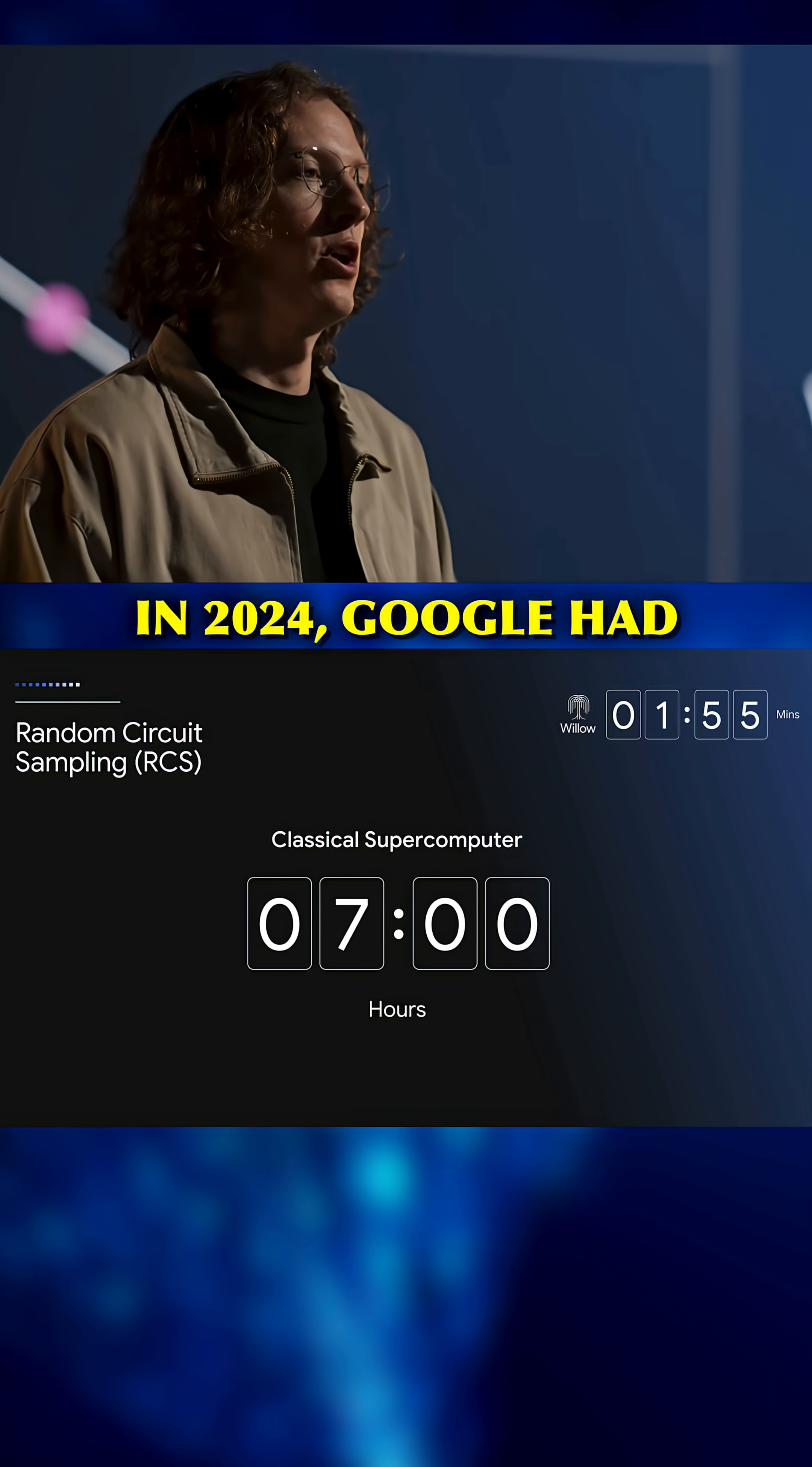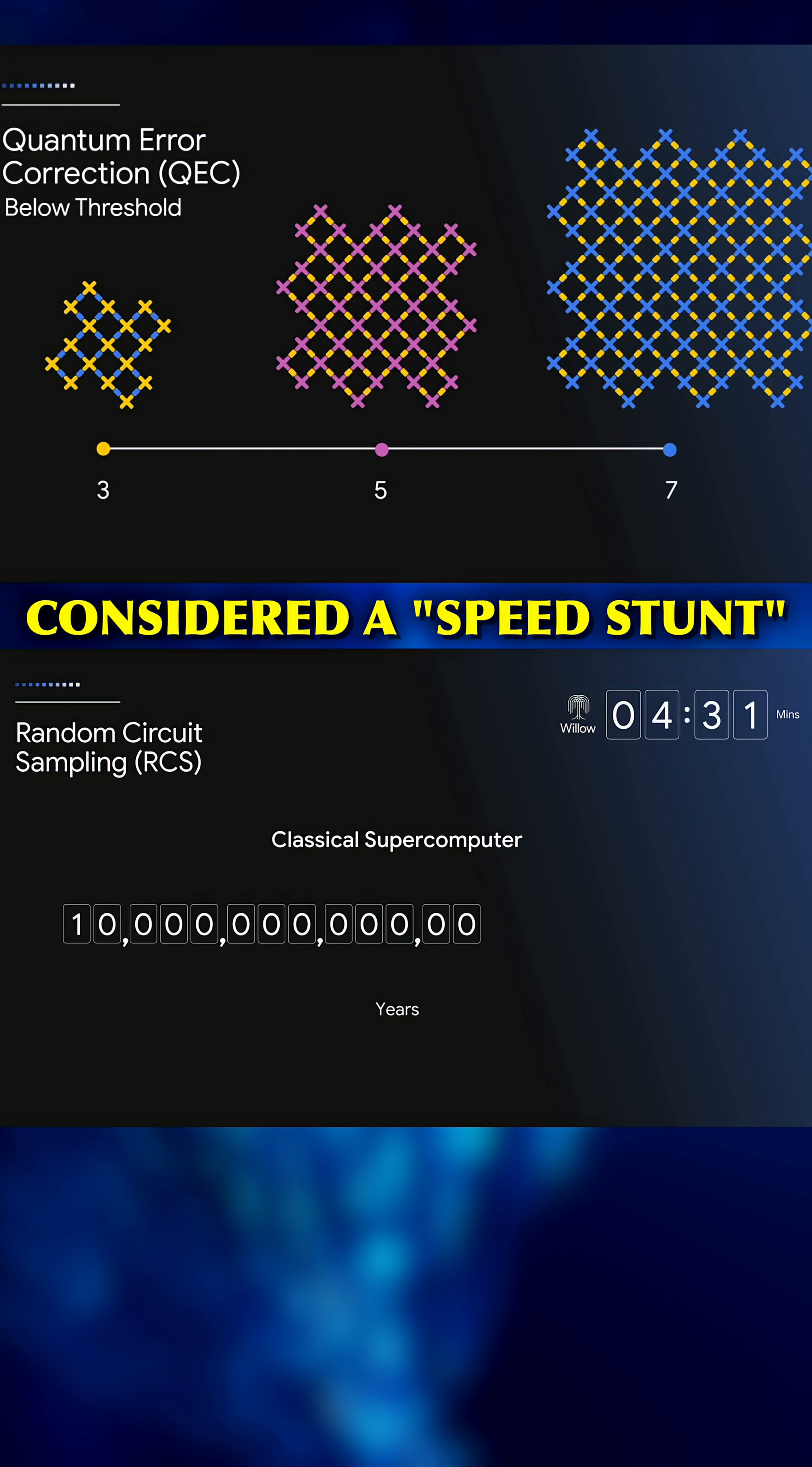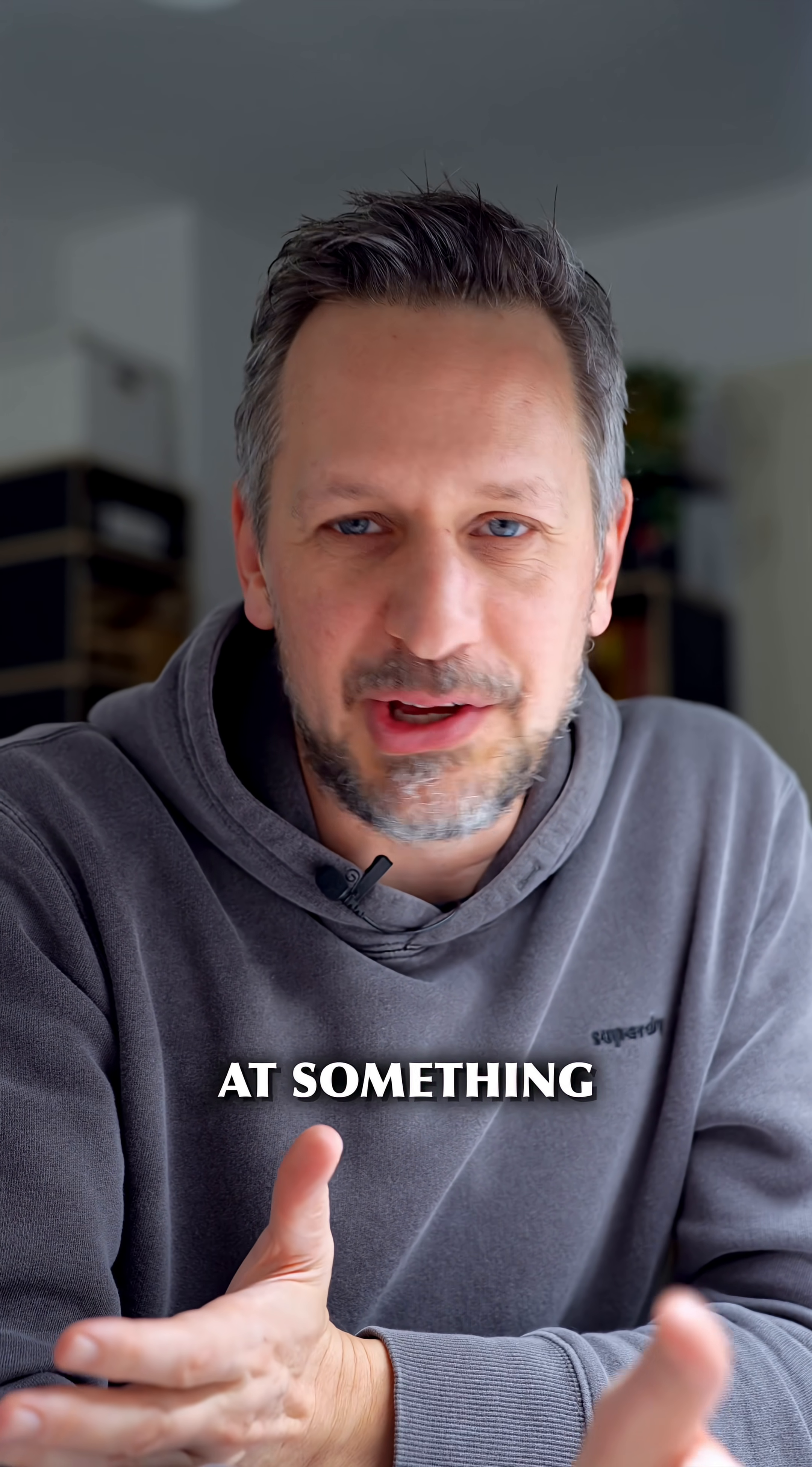In 2024, Google had declared quantum supremacy after Willow had beaten classical computers in random circuit sampling. However, this was widely considered a speed stunt because it only created meaningless random numbers. Basically, they demonstrated that Willow was the fastest computer in the world at something completely useless.